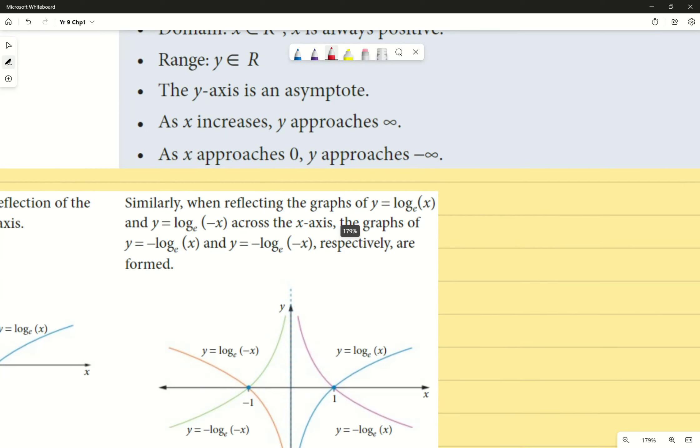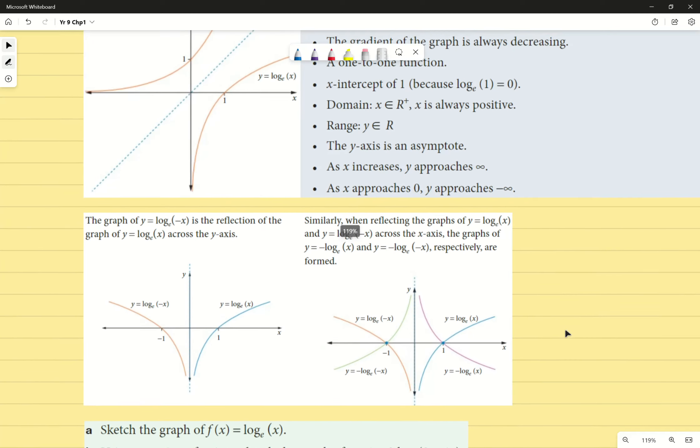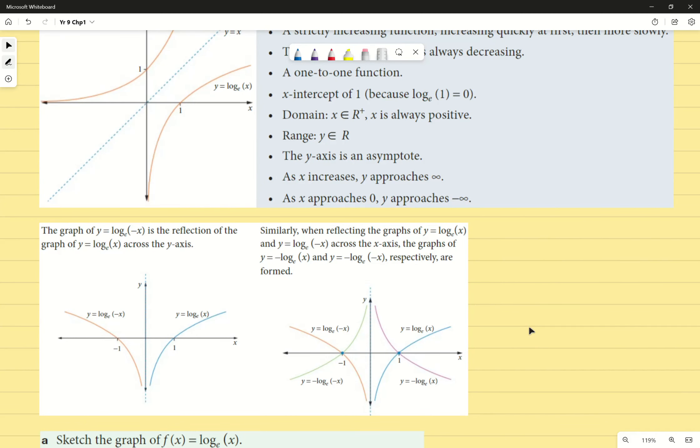Down here you can see two graphs, or two sections of text, essentially telling you the same thing that you already know, which is the transformations that we apply for our other polynomials also apply for our logarithmic graphs. If we have a negative in front of our x value, it's going to be reflected across the y-axis, same as for example f of x where it's a parabola.